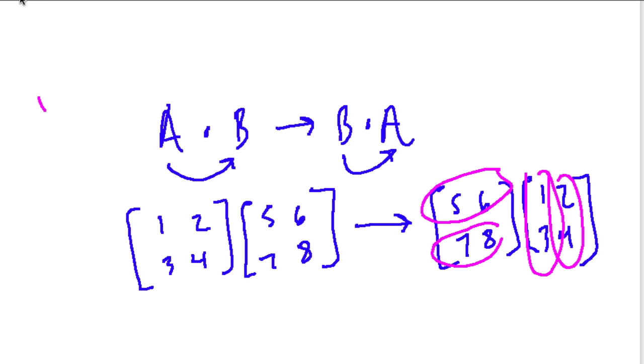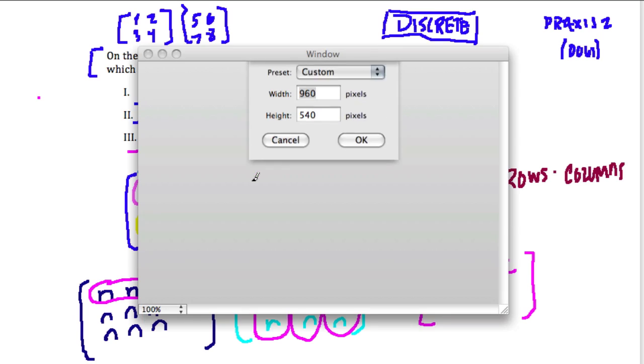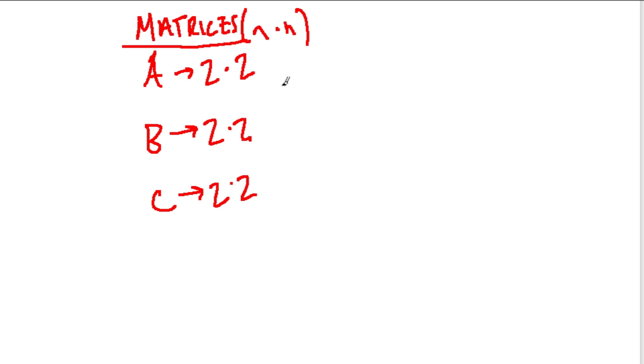And last, we have the transitive property. Transitive property, although I don't have to really define it here, basically says that A equals B and B equals C, then A equals C. But we're not looking at equality here, we're looking at conformable multiplication. So in other words, if I have three matrices A, B, and C, which are all 2 by 2 matrices, well, if I know that I can multiply A to B and I know I can multiply B to C, doesn't that also mean I can multiply A to C? Because they're all 2 by 2 matrices. So if A is conformable to B and B is conformable to C, A is conformable to C.